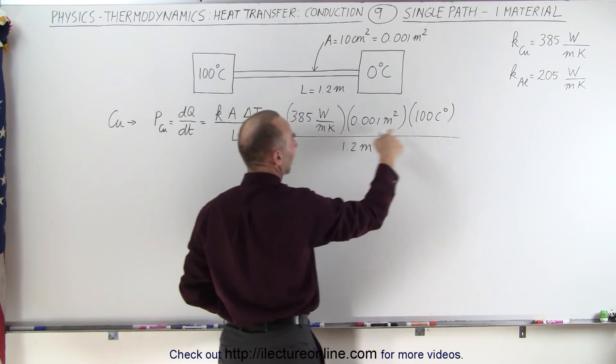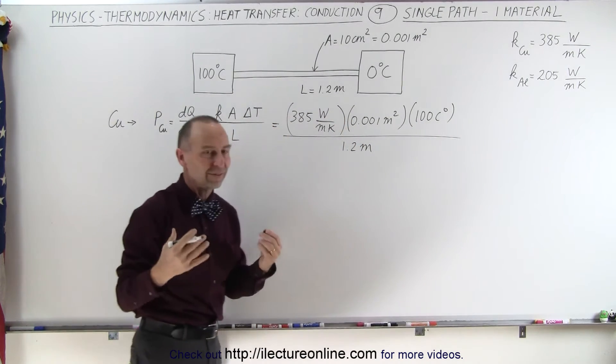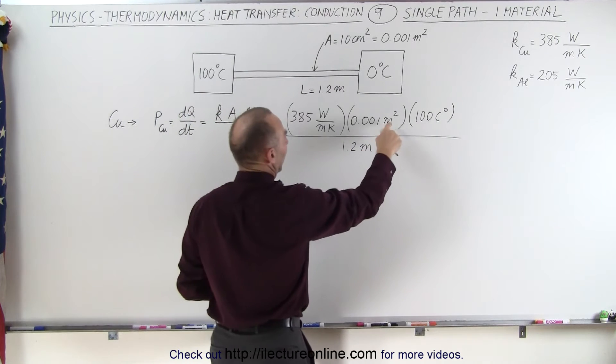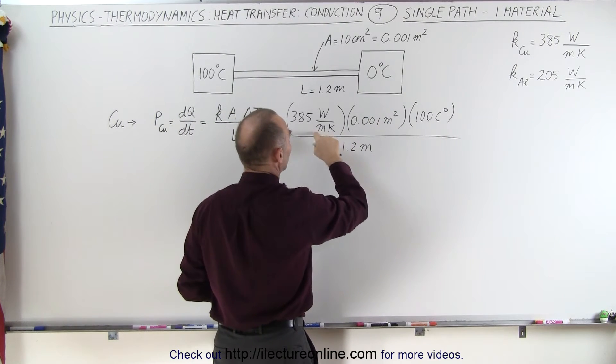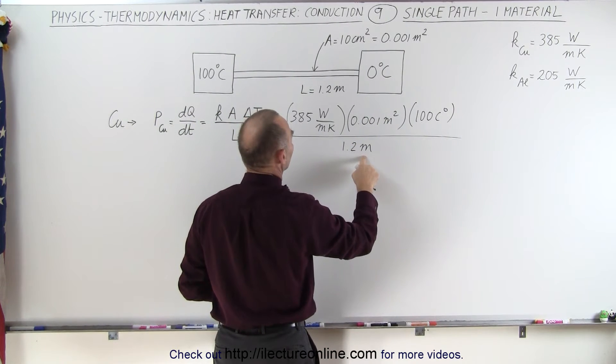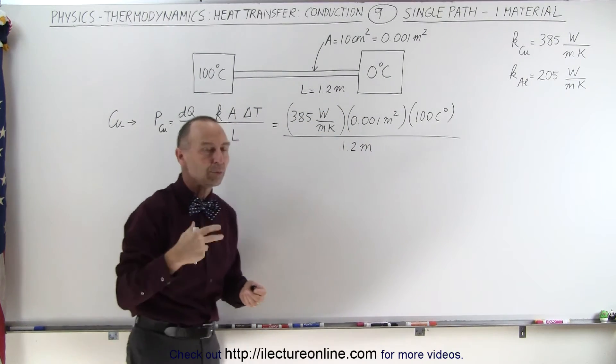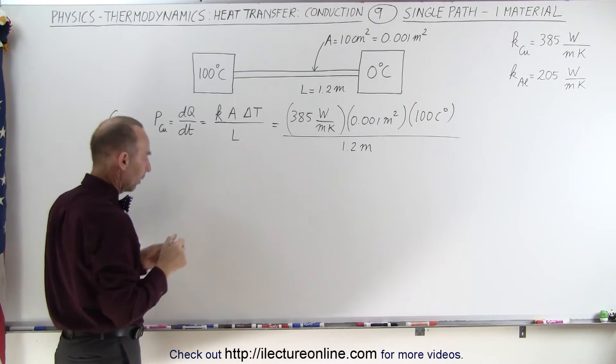Now notice that we have kelvin here, we have centigrade degrees, they're the same size, so we can cancel one by the other. We have meters squared, we have meters and meters, so the meter cancels, so we end up with simply watts as the units, which is the number of joules per second, which is what we're looking for.